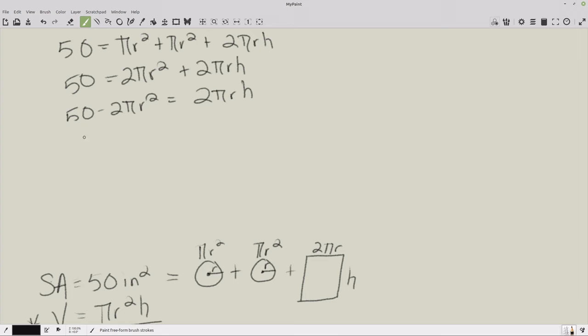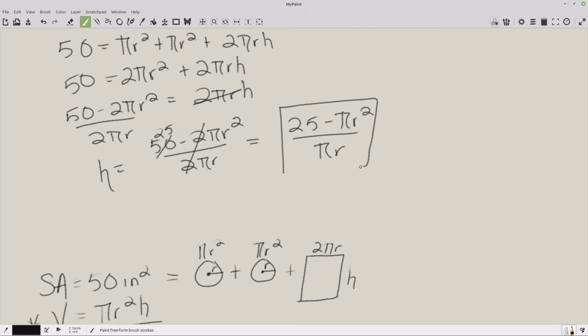So I'm going to go 50 minus 2 pi r squared equals 2 pi r h. Now I need to divide that over by 2 pi r. So h equals 50 minus 2 pi r squared over 2 pi r. Well, I can actually divide everything by 2. And this becomes 25. So it actually equals 25 minus pi r squared over pi r. There is my h.